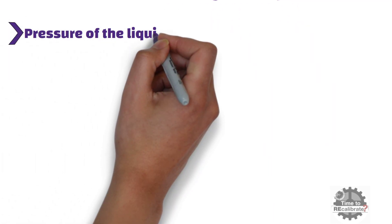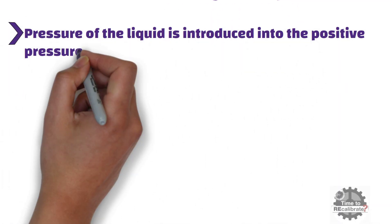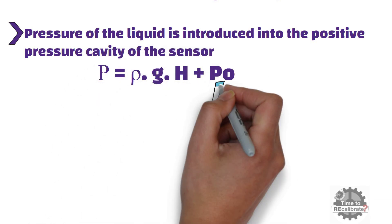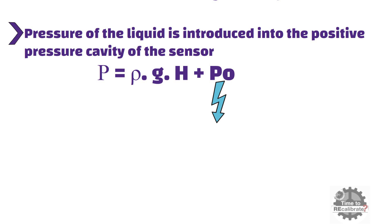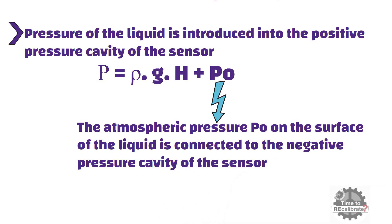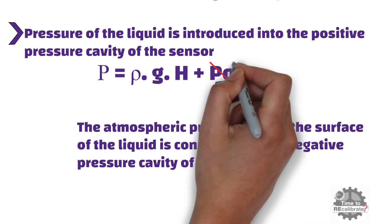Here, the pressure of the liquid is introduced into the positive pressure cavity of the sensor through the gas-conductive stainless steel. And the atmospheric pressure P0 on the surface of the liquid is connected to the negative pressure cavity of the sensor to compensate the P0 at the back of the sensor.